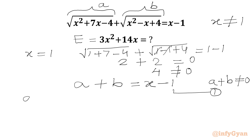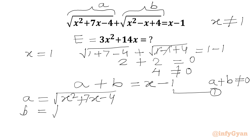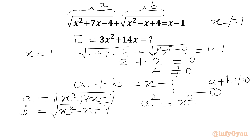Our substitution is: a equals square root of (x² + 7x - 4), and b equals square root of (x² - x + 4). So a² equals x² + 7x - 4, and b² equals x² - x + 4.